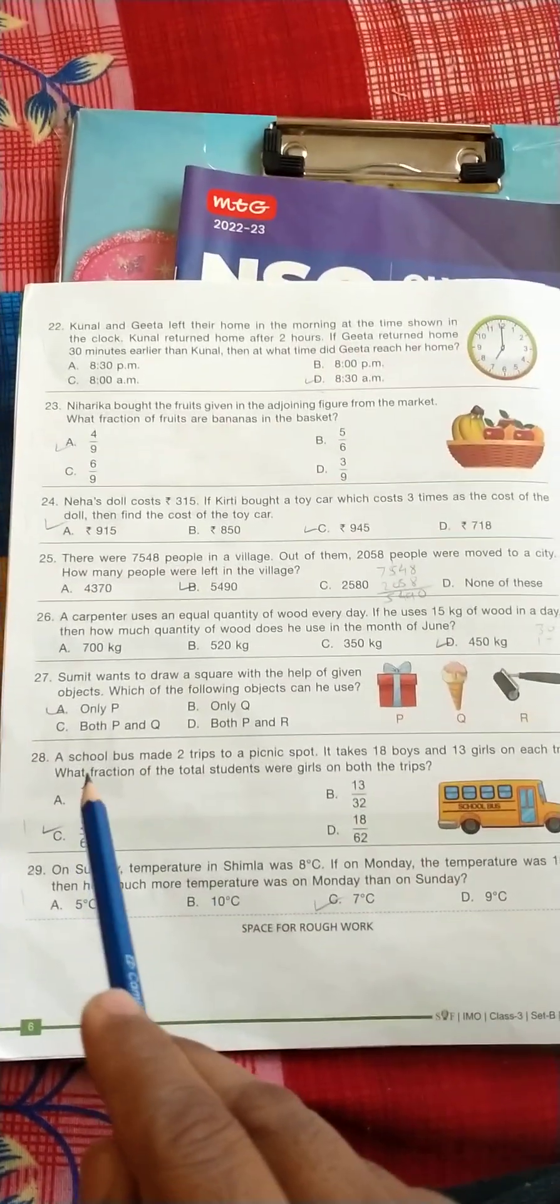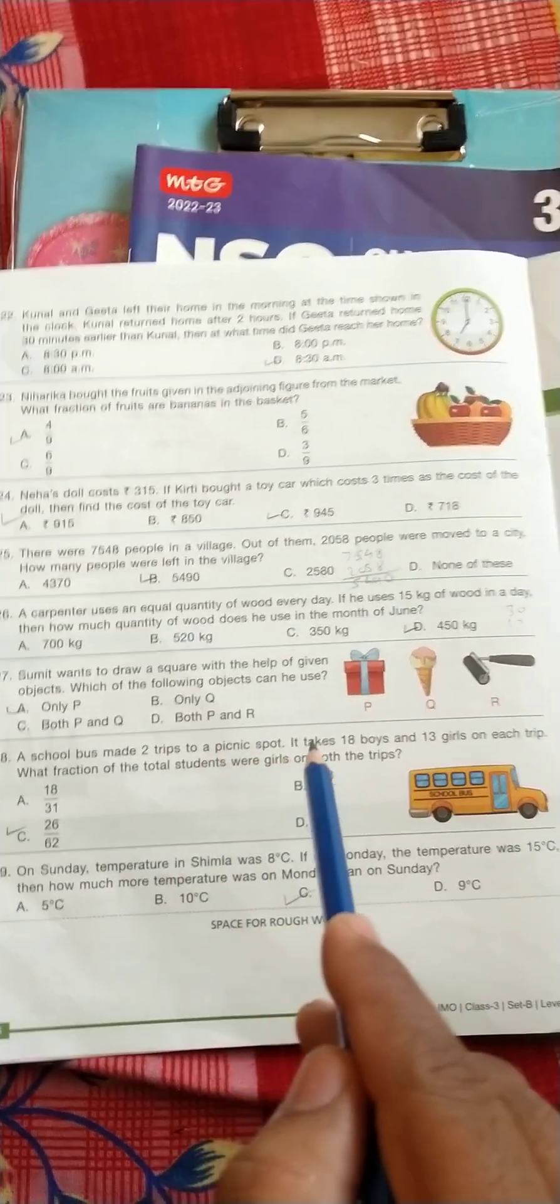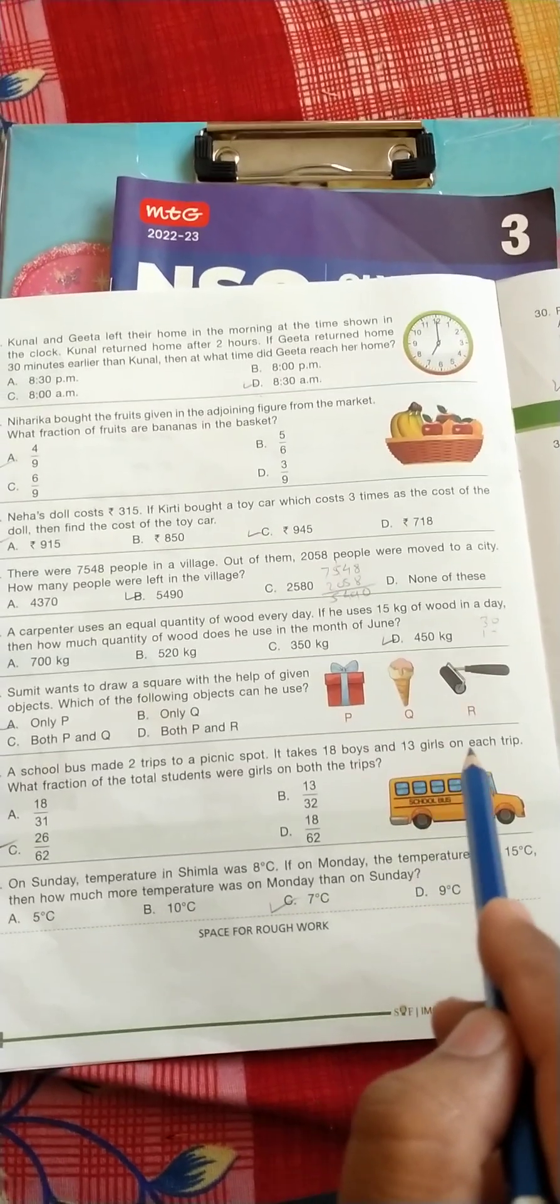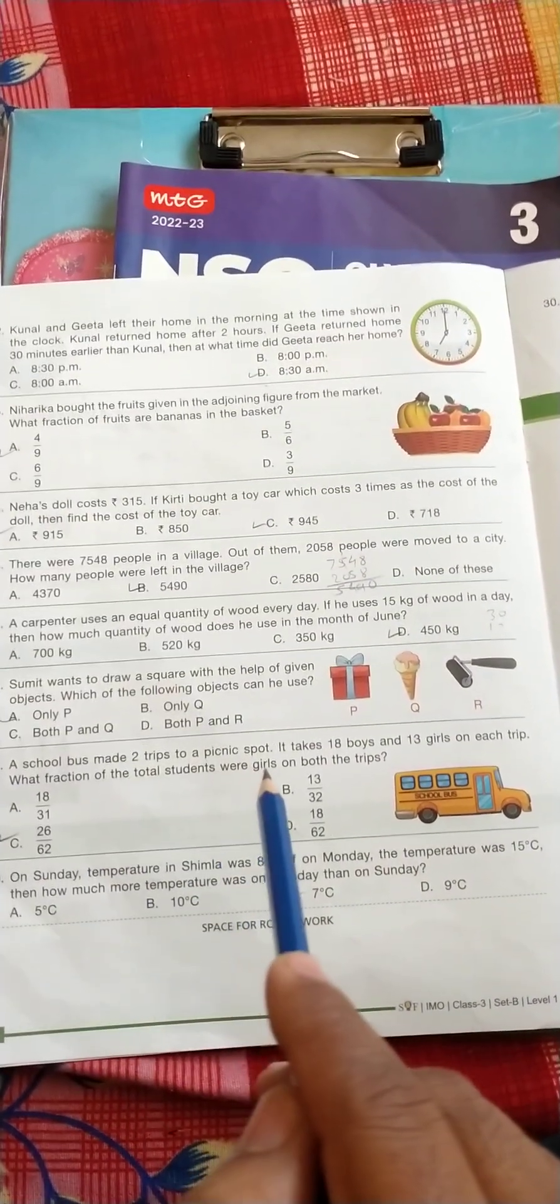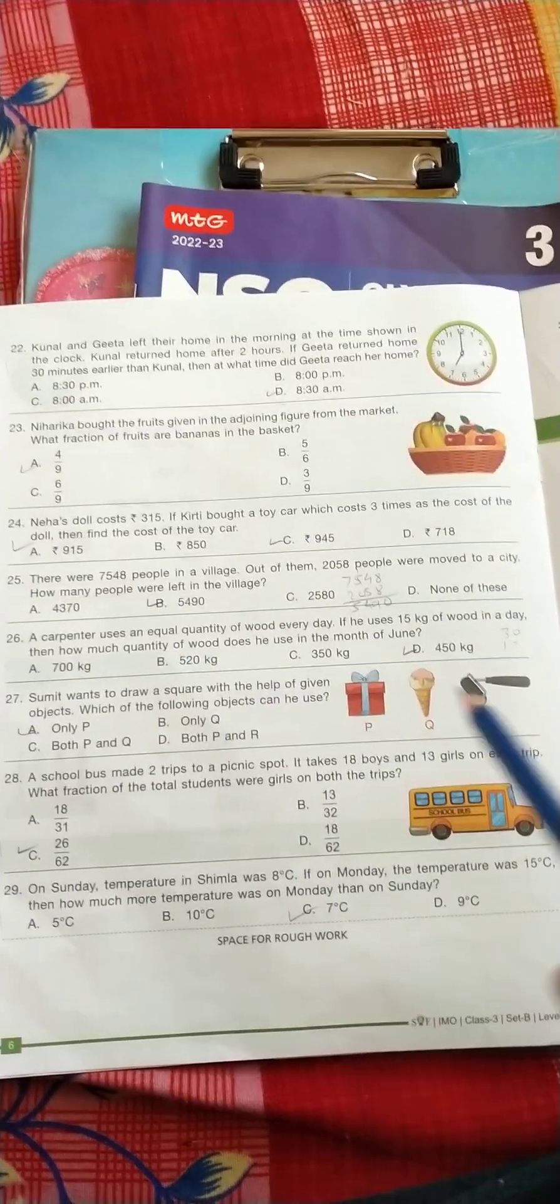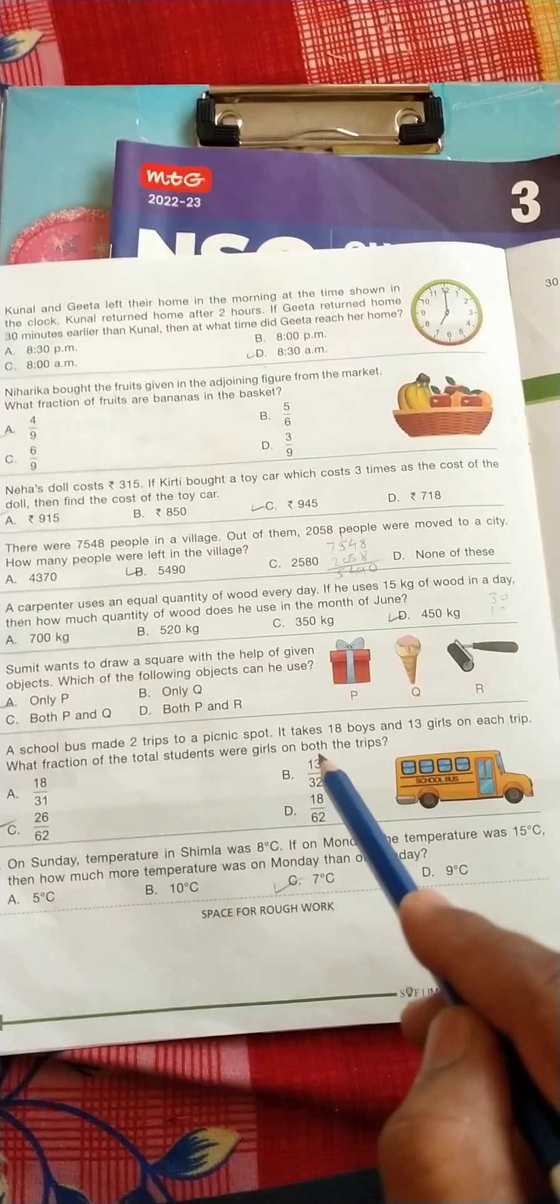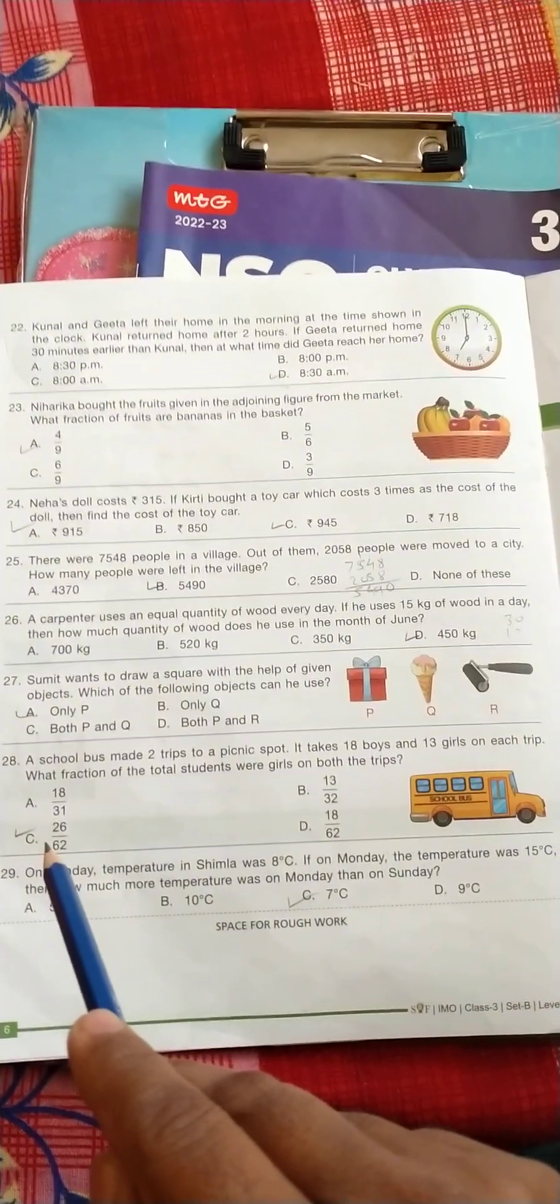Question number 28: a school bus made 2 trips to a picnic spot. It takes 18 boys and 13 girls on each trip. What fraction of the total student were girl on both the trip? So the number of girl is 13, so 13 multiplied by 2, that's 26. So the correct option is C.